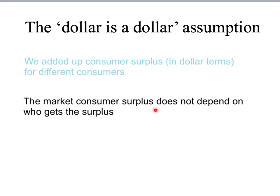The fact that we're moving dollars between individual consumers is irrelevant to our market consumer surplus measure — and that means we're using the dollar-is-a-dollar assumption. We don't care who gets the surplus; we're assuming that a dollar to Sarah is the same as a dollar to Matt is the same as a dollar to Sunita or any other consumer. That's a necessary assumption when going from individual consumer surplus to market consumer surplus. Thanks for listening.